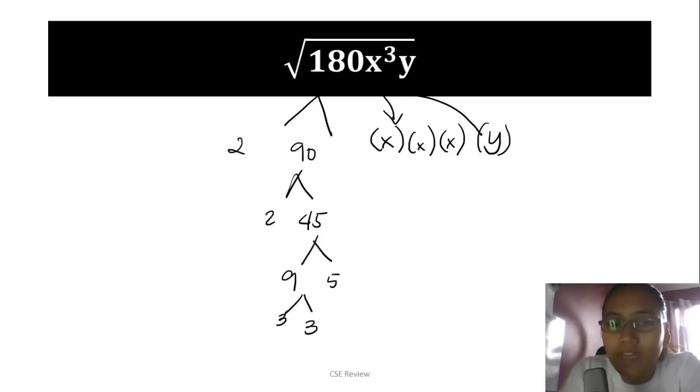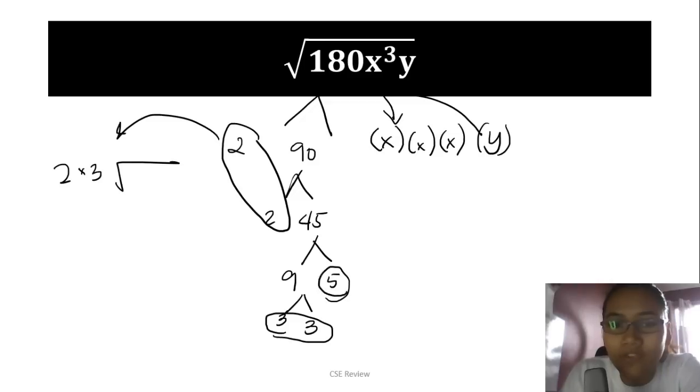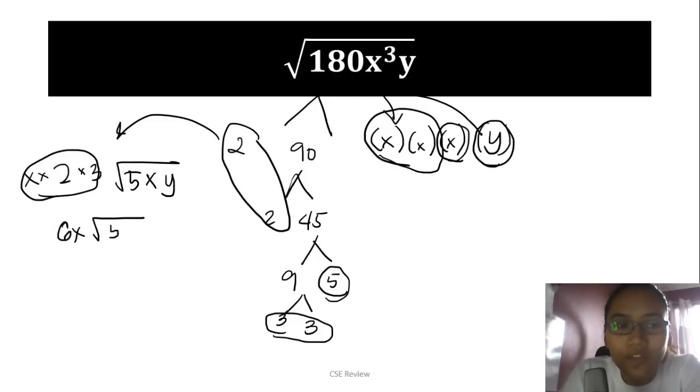The goal is to extract everything possible. If you have 2 of a kind, a pair, they come out together. The 2 comes out as a pair—you have 2. The 3 also comes out as a pair, so times 3. The 5 stays inside. With the x's, since you have 1, 2, 3 x's, a pair comes out—times x here. One x and one y are left inside because they don't have pairs. So 5xy stays under the radical. Multiply everything outside: 6x√(5xy). That's your answer.